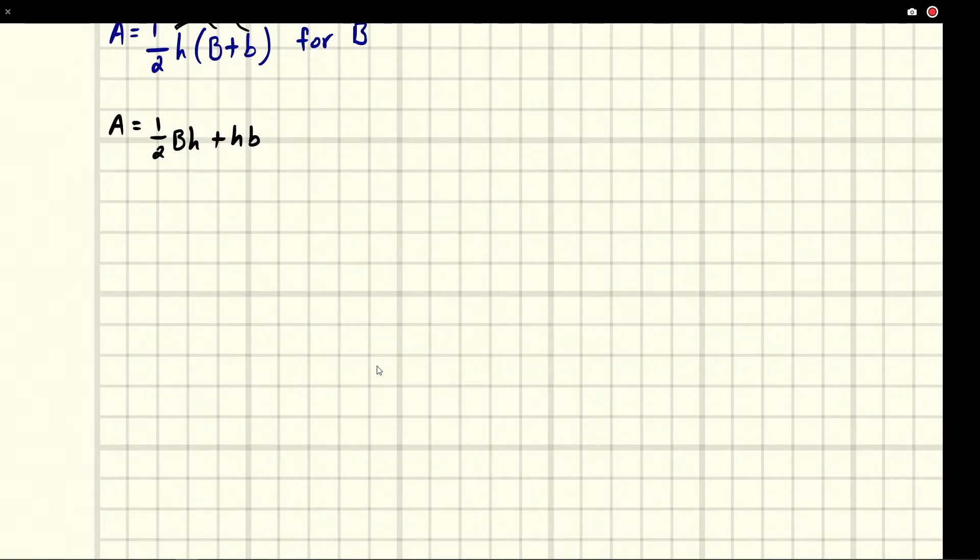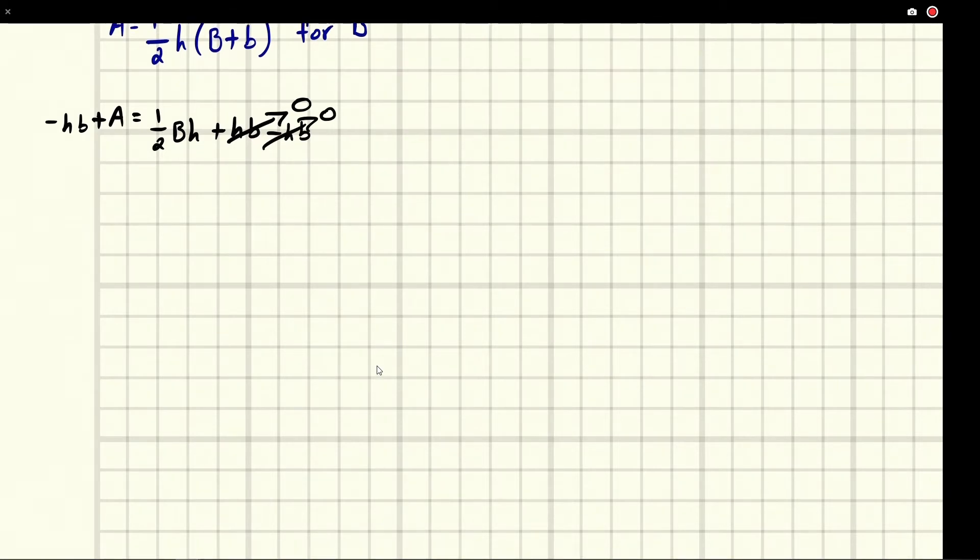This is plus HB, so we're going to do minus HB. We have to do it to both sides because of equality. When we do that, HB minus HB would be the exact same thing—they combine to be zero, and anything plus zero is itself. So we have on one side one-half BH, and on the other we have minus HB plus A.